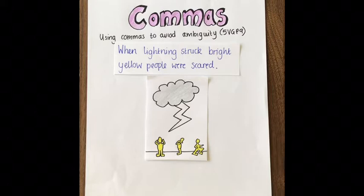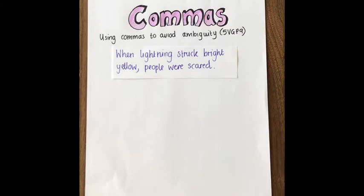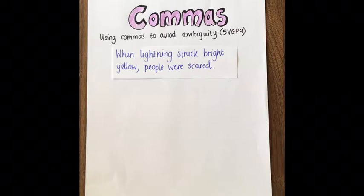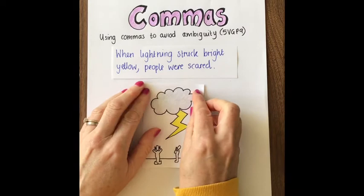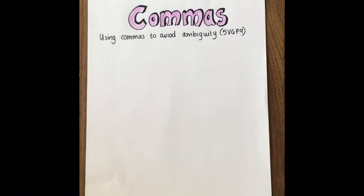I wonder what you got — this is what I got: 'When lightning struck bright yellow people were scared.' We don't very often see bright yellow people running around underneath a thunderstorm! So let's put the comma in and see what difference it makes: 'When lightning struck, bright yellow, people were scared.' Now the lightning is bright yellow and the people are scared. Can you see what difference the comma made to the sentence?